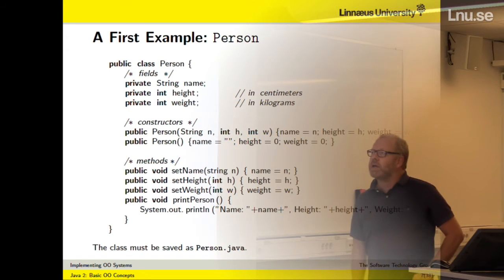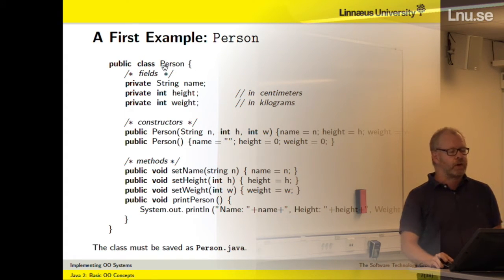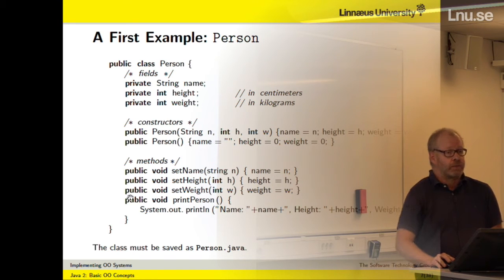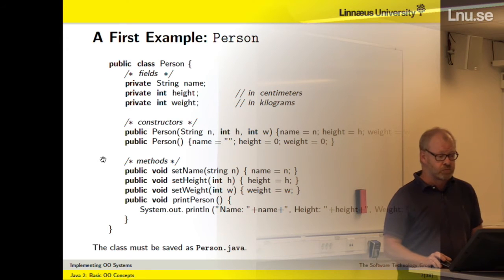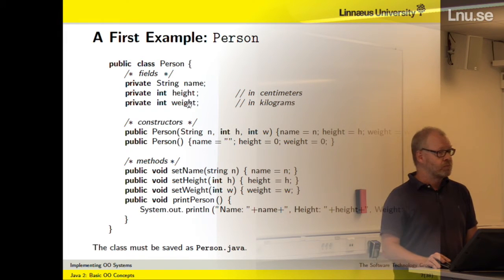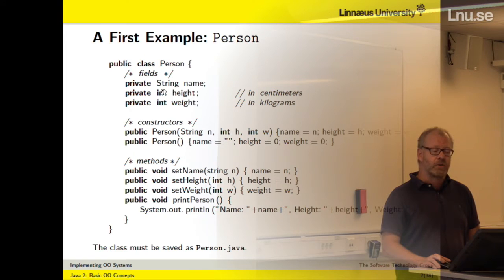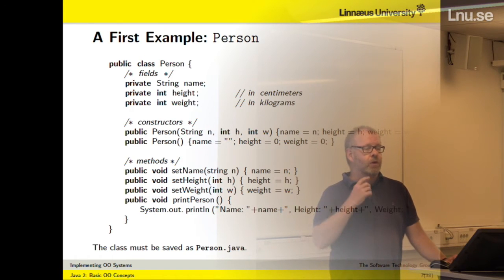This is the first example of a class in Java. Remember from the first lecture: if you have a class named Person, it must be saved in a file named Person.java. This one is not executable by itself — you cannot run a class. You must have a main method that initiates Person objects. This is a class that describes a person. I have done a very rough abstraction: a person comes with a name, a height, and a weight — these are the data. Every person comes with those fields. Then we have constructors, which are used in the code to create new persons.